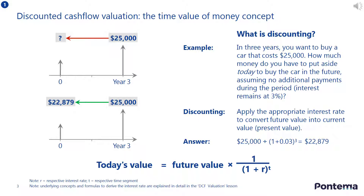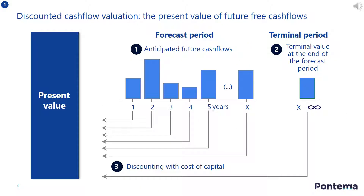The slide explains this time value of money concept. Please review the example and ensure you understand it before proceeding. The slide shows how the discounted cash flow process works in practice, where the estimated future cash flows are adjusted to the present value to reflect the time value of money by using the discounting process. The discount factor used in the calculation adjusts for risk and timing, and the terminal value estimates cash flows after the forecast period into perpetuity.